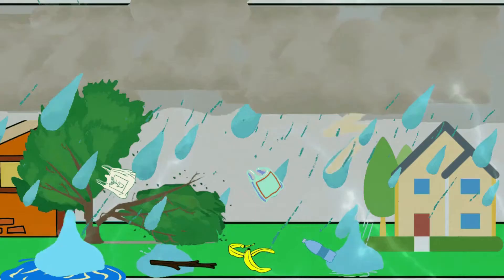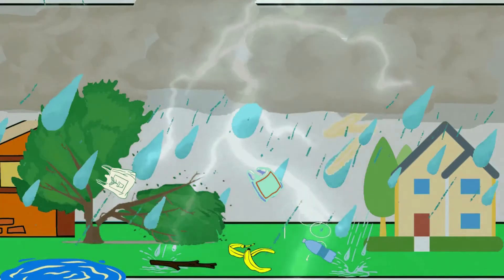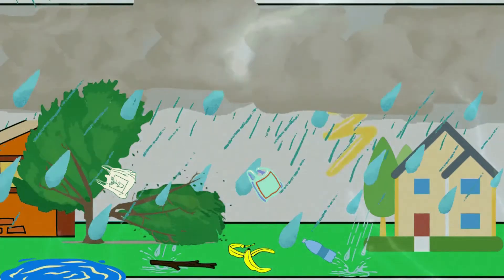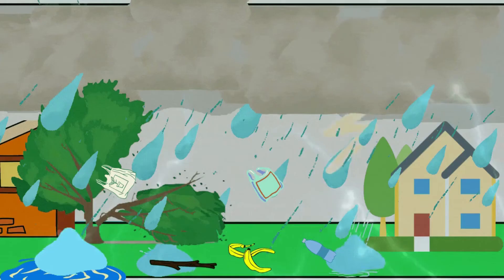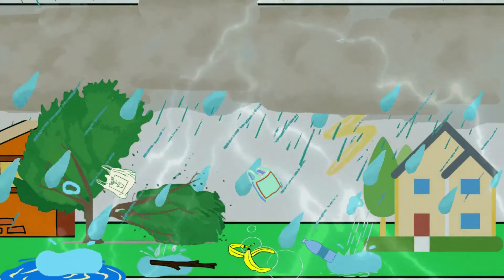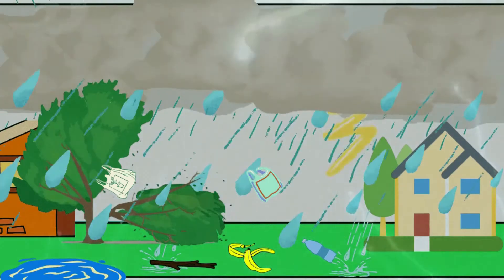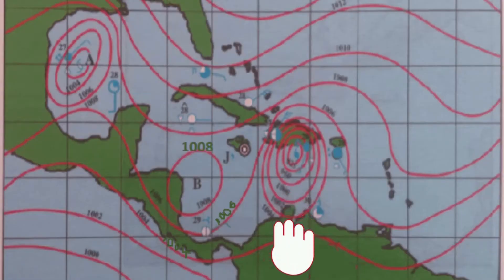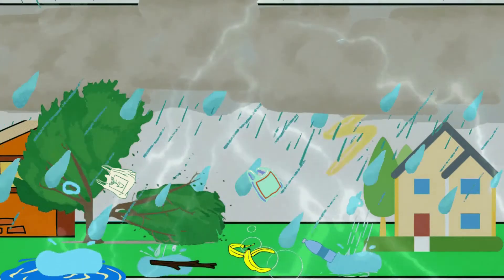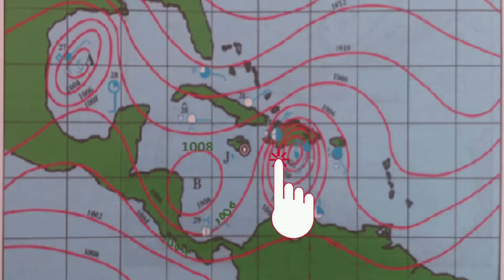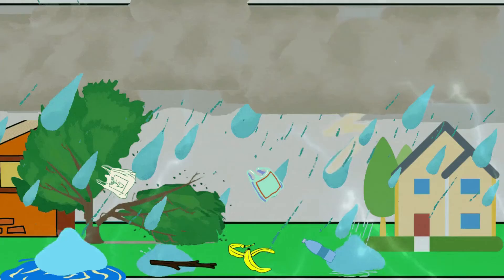As the eyewall passes over, winds are at their strongest. This is indicated on a synoptic chart by closely spaced isobars, which implies a steep pressure gradient. The towering cumulonimbus clouds will bring thunderstorms.